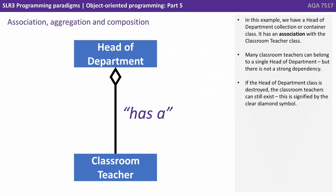In this example, we have a head of department collection or container class. It has an association with the classroom teacher class. Many classroom teachers can belong to a single head of department, but there is not a strong dependency. If the head of department class is destroyed, the classroom teachers can still exist. This is signified by the clear diamond symbol.